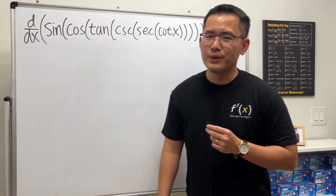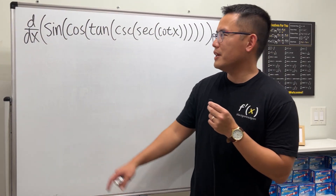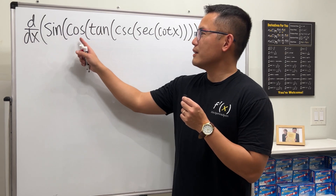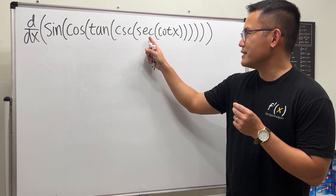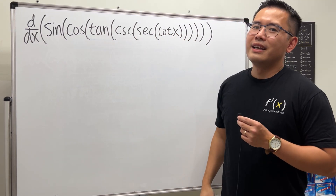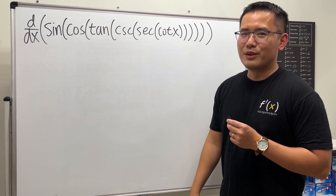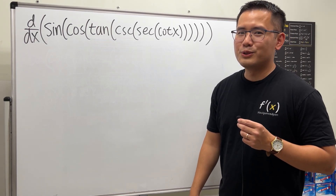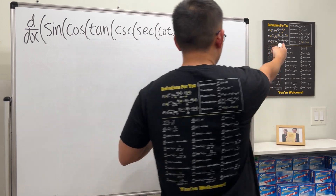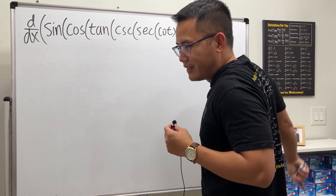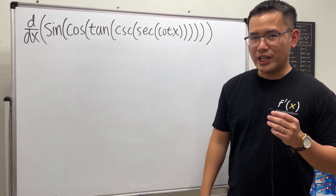In this calculus tutorial, I will show you how to differentiate sine of cosine of tangent of cosecant of secant of cotangent of x. We need to know the derivatives of all the trig functions — they are also on my back as well as over there — and we also have to use the chain rule.